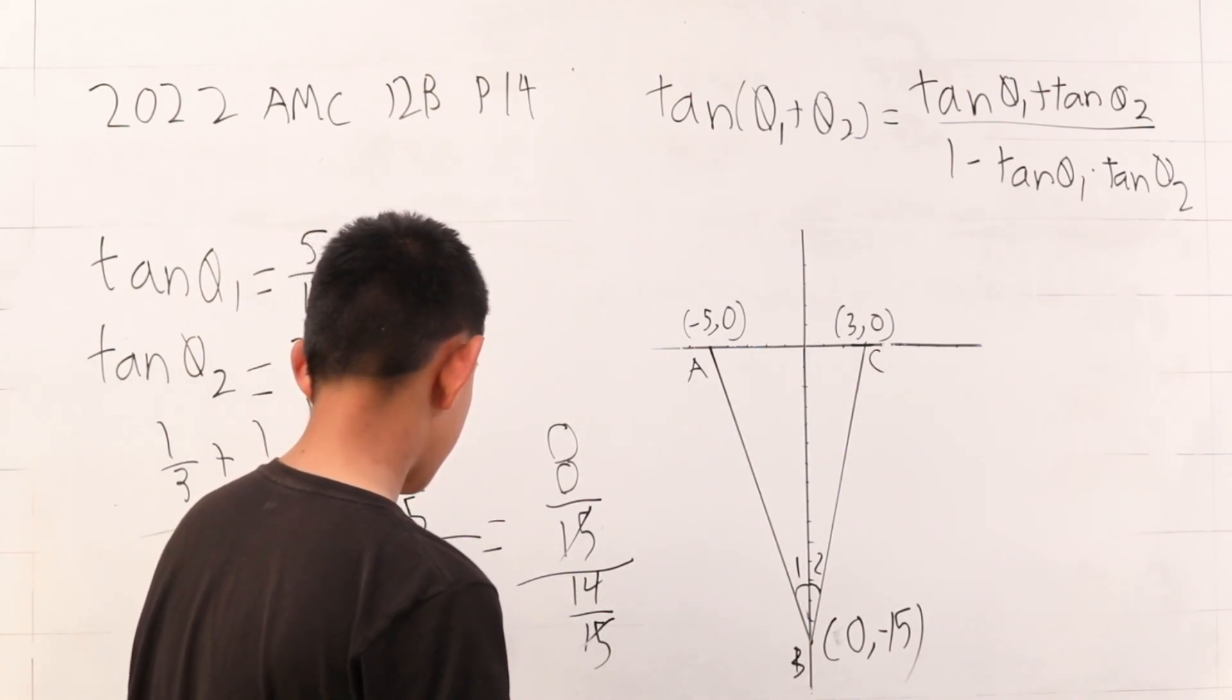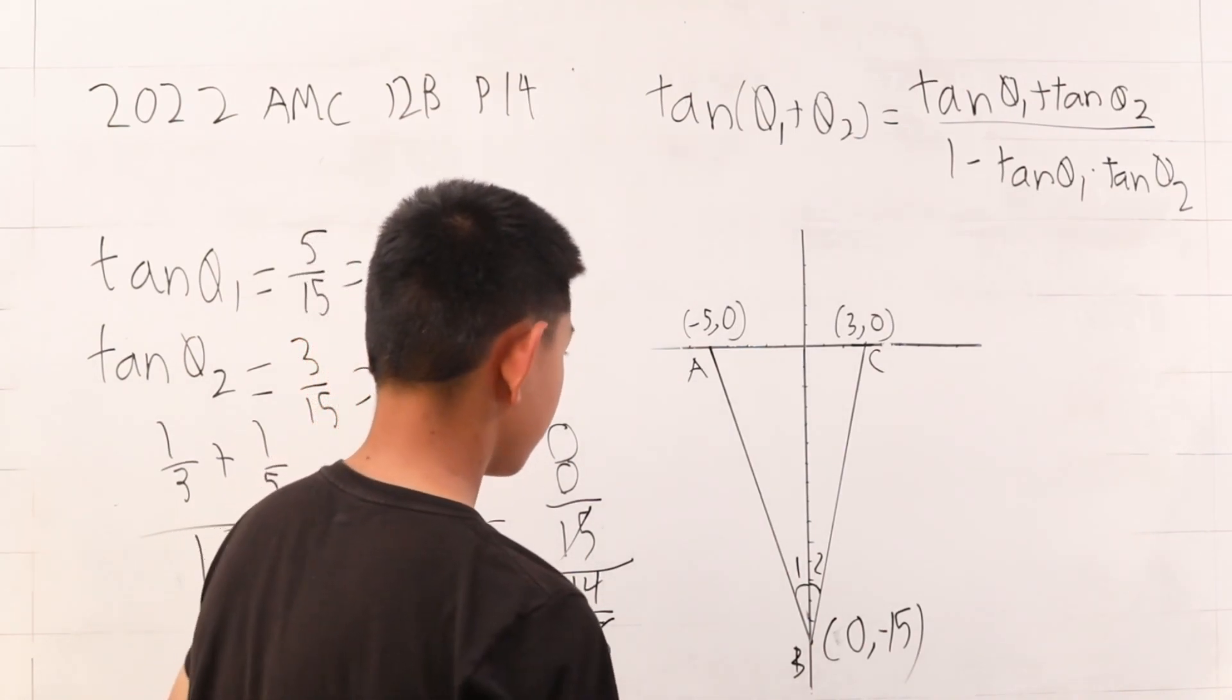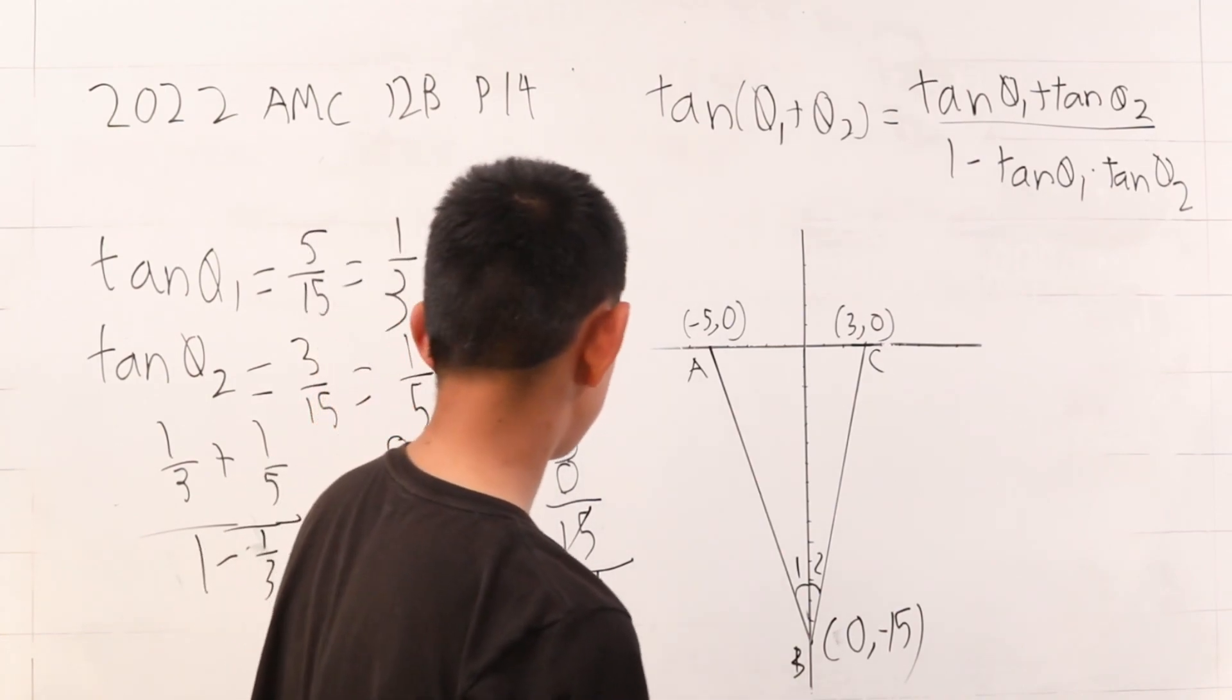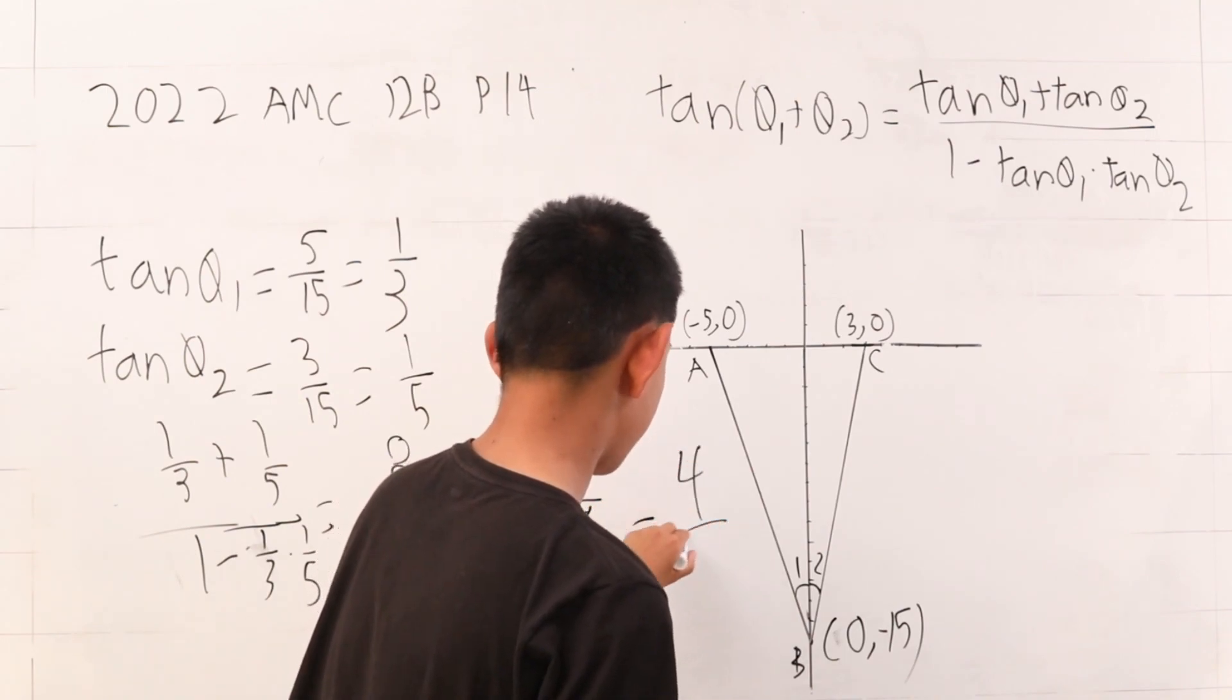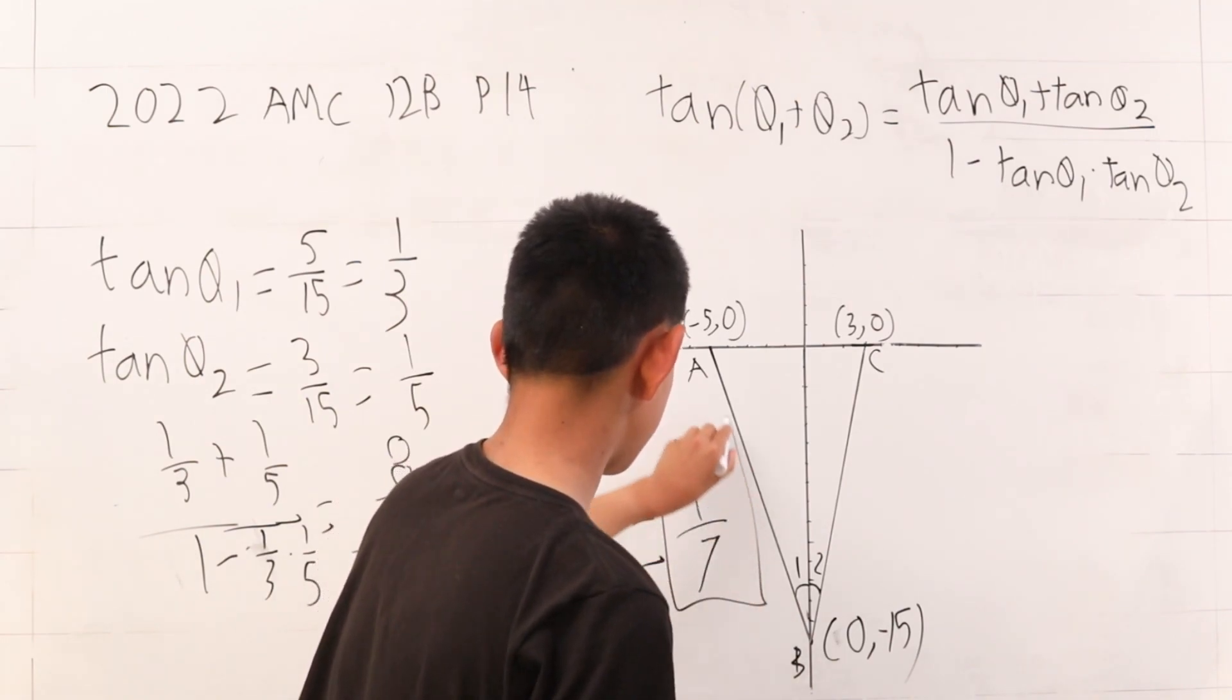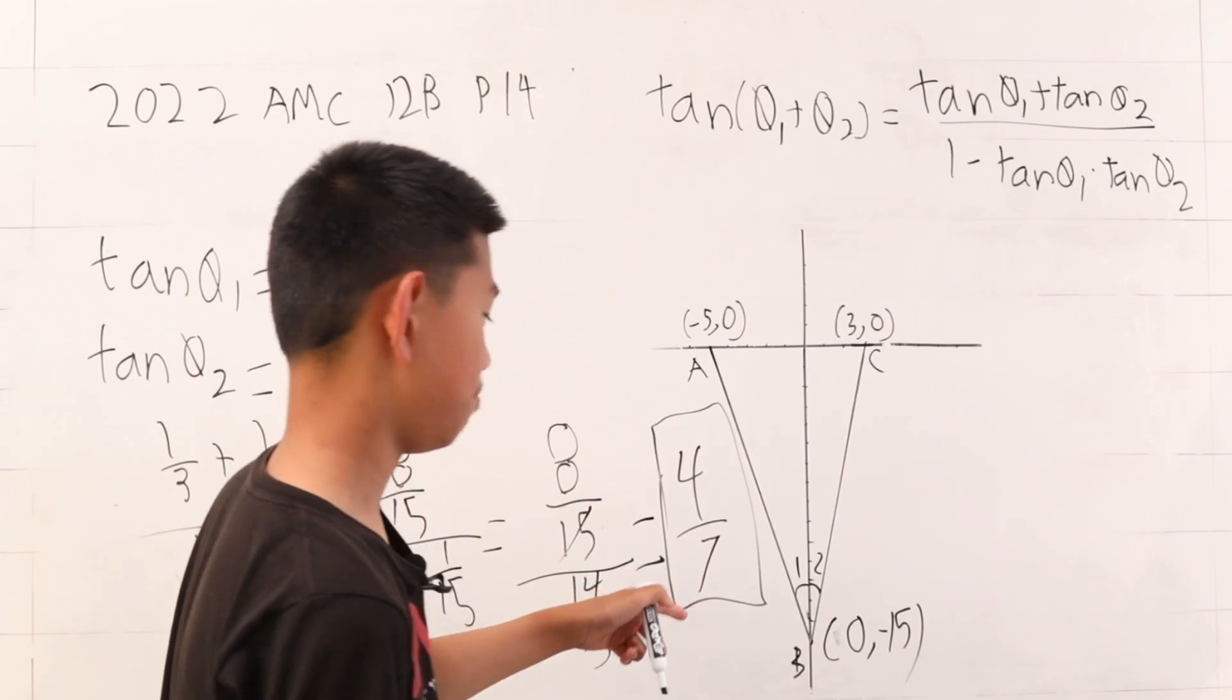So our answer is 8 over 14, which is 4 sevenths. So we have found out the tangent of angle ABC.